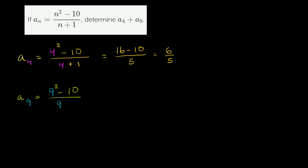9 plus 1 is equal to, in the numerator we have 81 minus 10 over 10. And so this is going to be equal to 71 over 10.